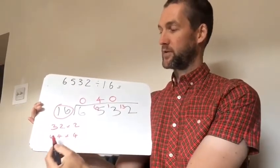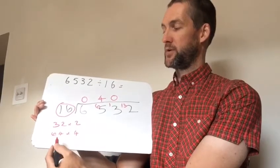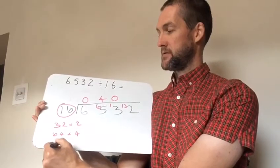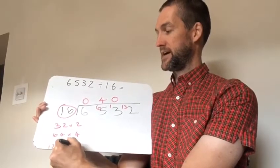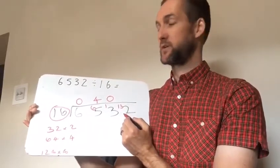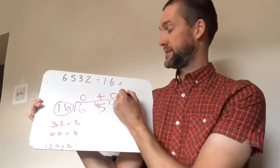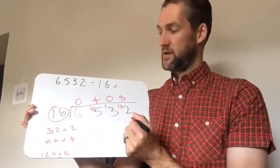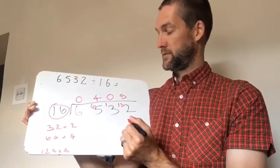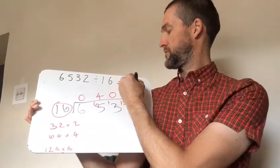Now again if we have a look at this 64, if we doubled 64 we get 128. And that is 8 lots. And that is just below 132 so we know 16 can only go into 132 8 times. So that leaves us with a remainder now. That remainder is 4.